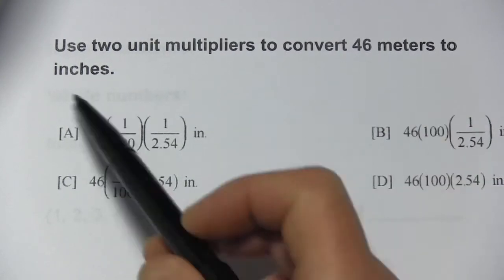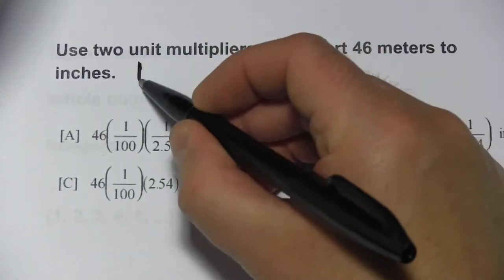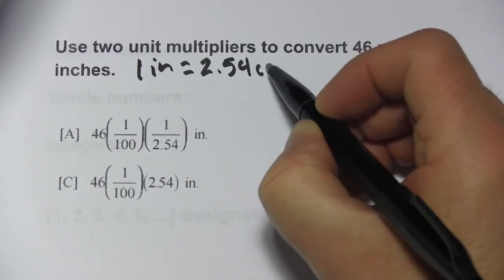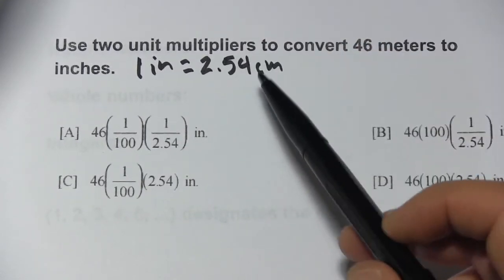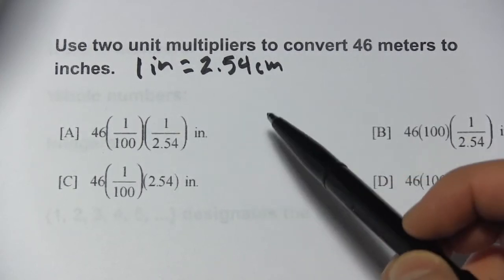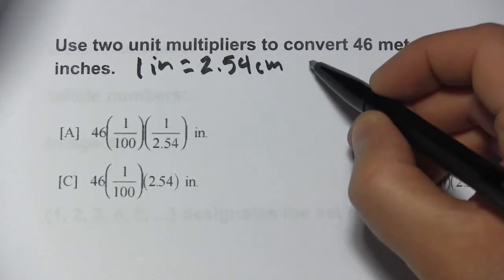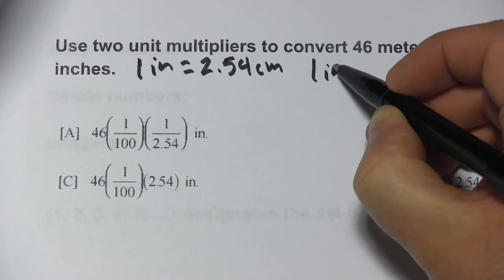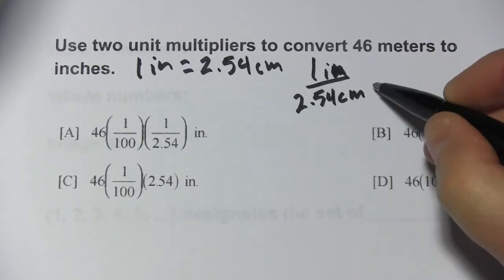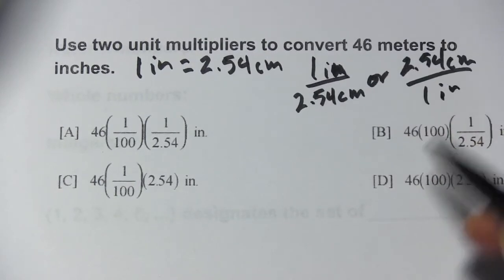We're also converting between metric and English. I do know that in one inch there are 2.54 centimeters. I'm going to make a unit multiplier out of that — actually two. I write these unit multipliers as fractions: either 1 inch over 2.54 centimeters, or 2.54 centimeters over 1 inch — just turned upside down.